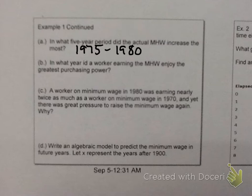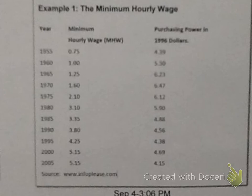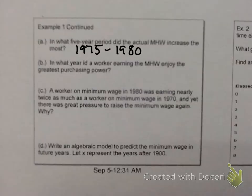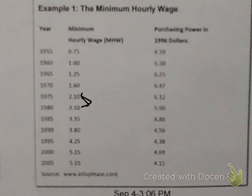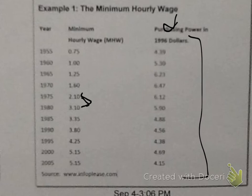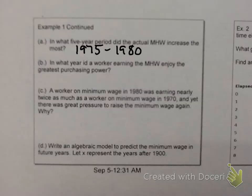This chart determined that from 1975 to 1980 was the highest increase of the minimum wage. The next question asks: in what year did a worker earning the minimum hourly wage enjoy the greatest purchasing power? Looking down the purchasing power column, 647 appears to be the highest value, and that is in 1970. So 1970 was the year that a worker earning the minimum hourly wage enjoyed their greatest purchasing power.